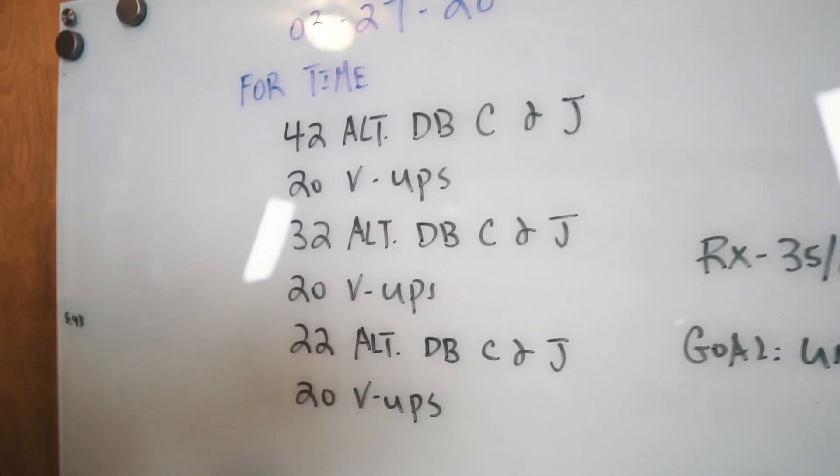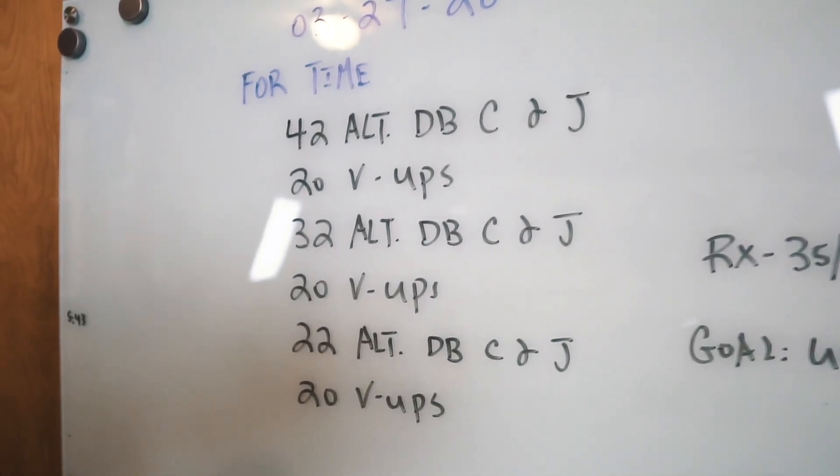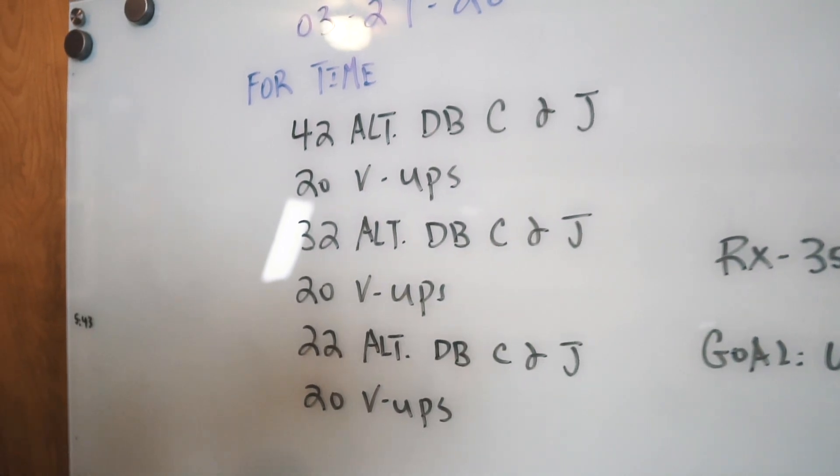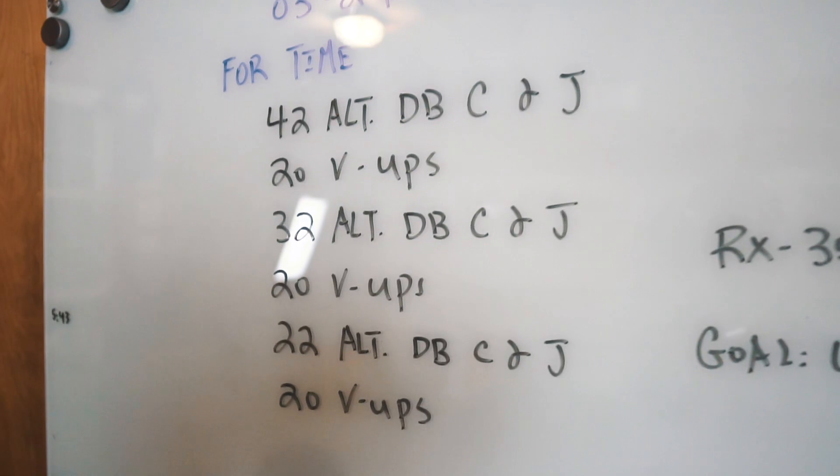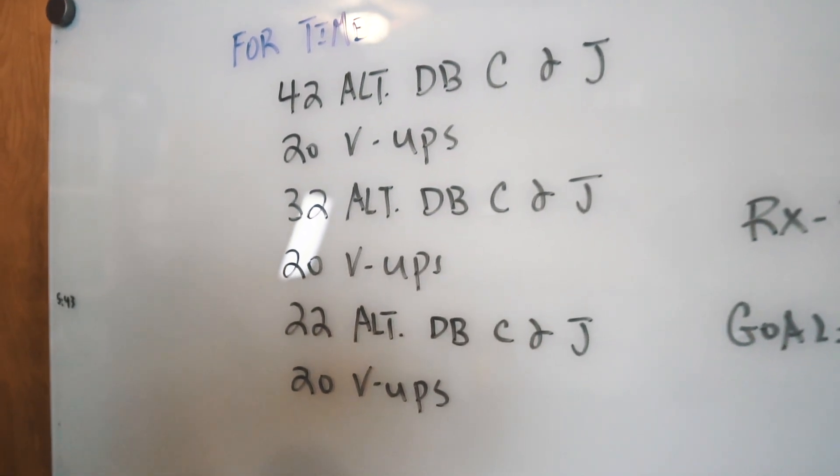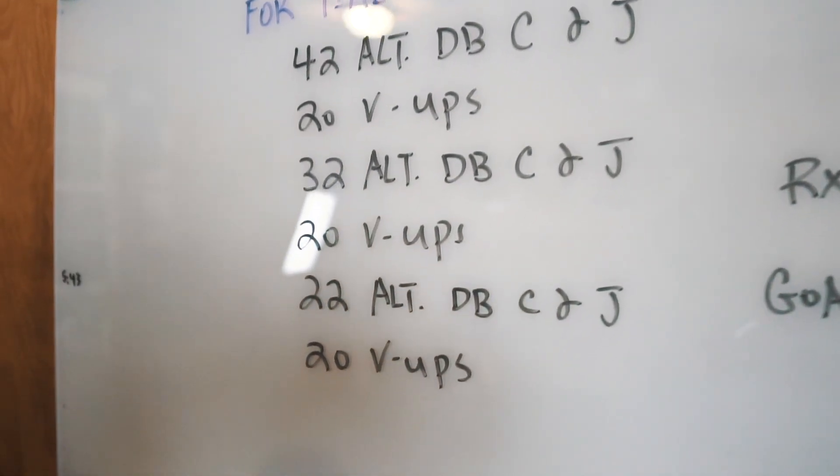You have 42 alternating dumbbell clean and jerks, then 20 V-ups, then 32 alternating dumbbell clean and jerks, then 20 V-ups again, and then 22 alternating dumbbell clean and jerks, and then 20 V-ups.